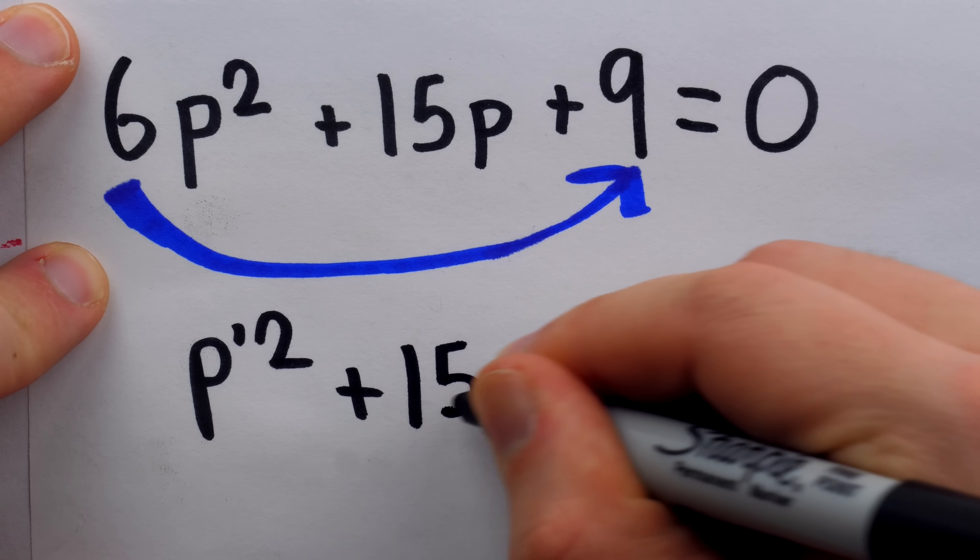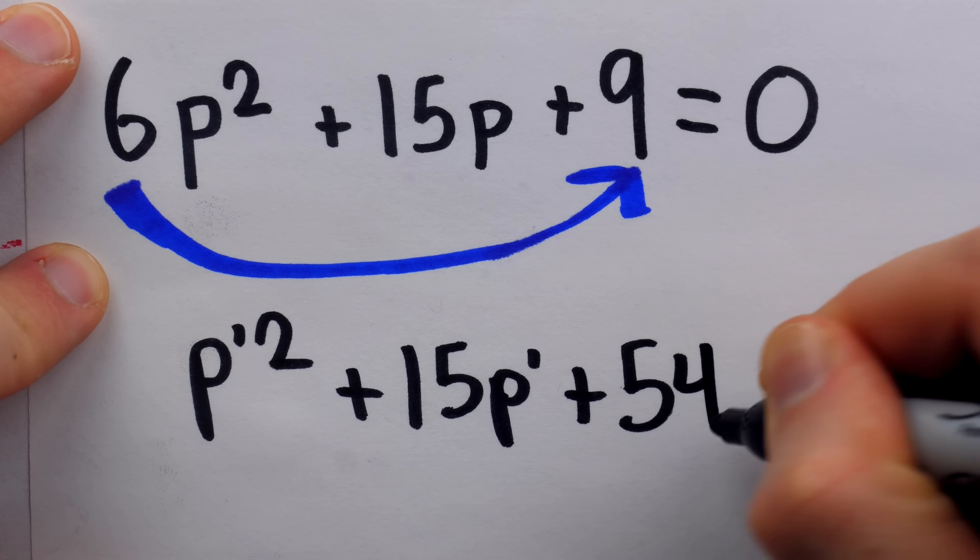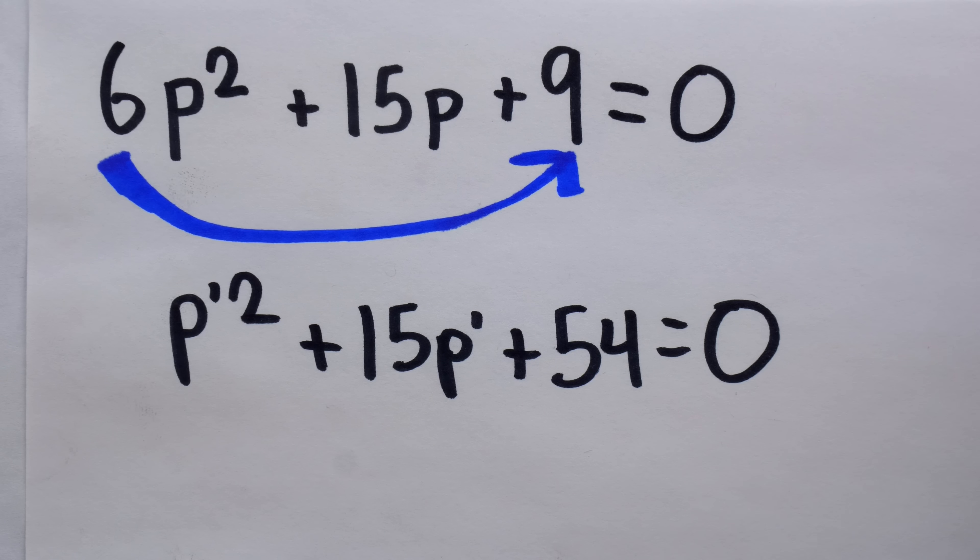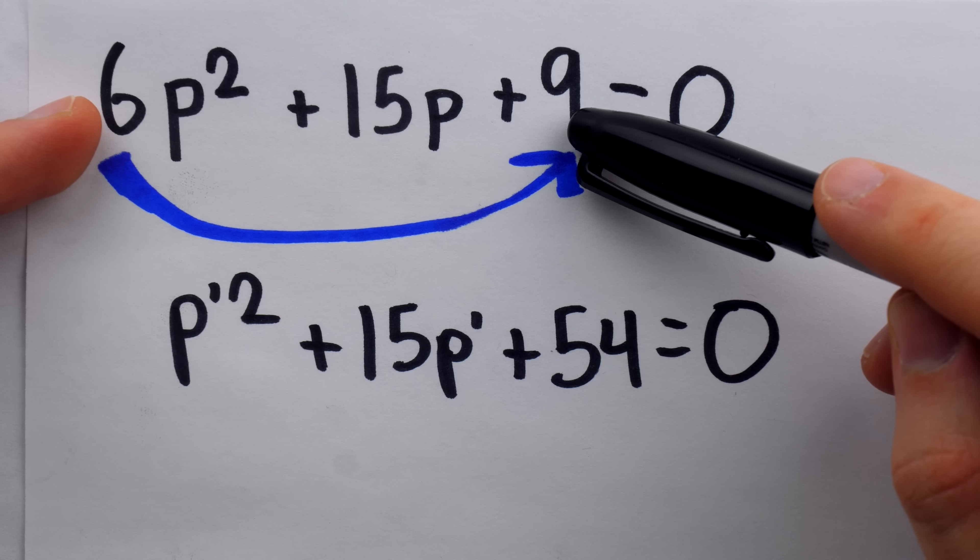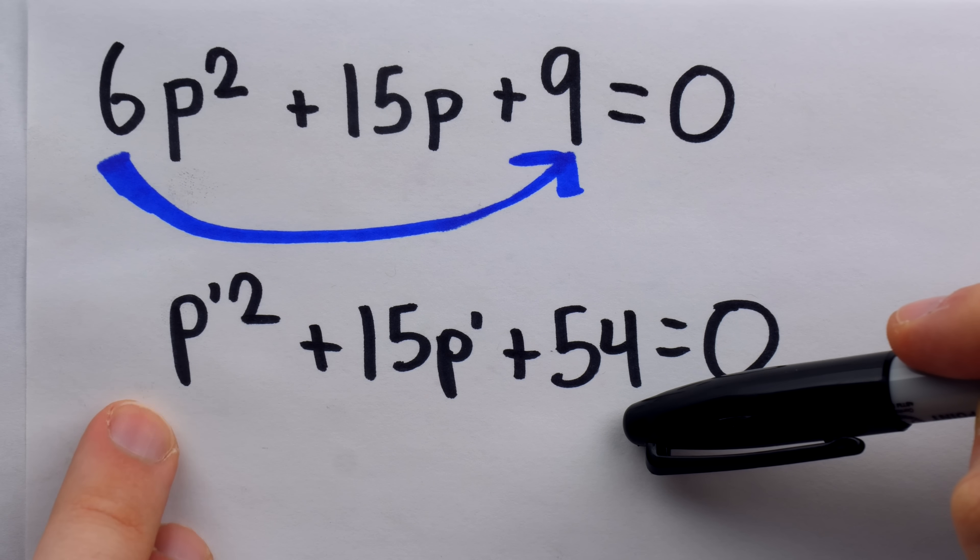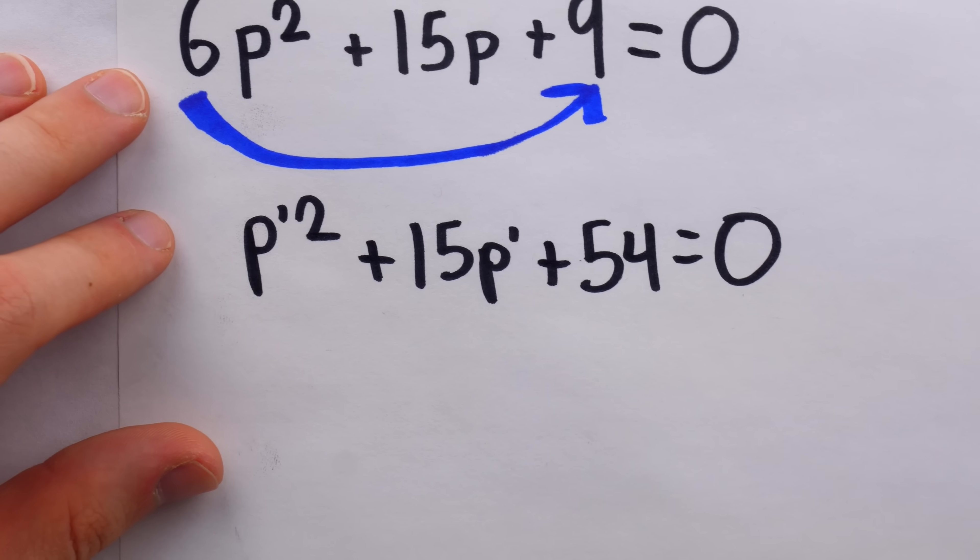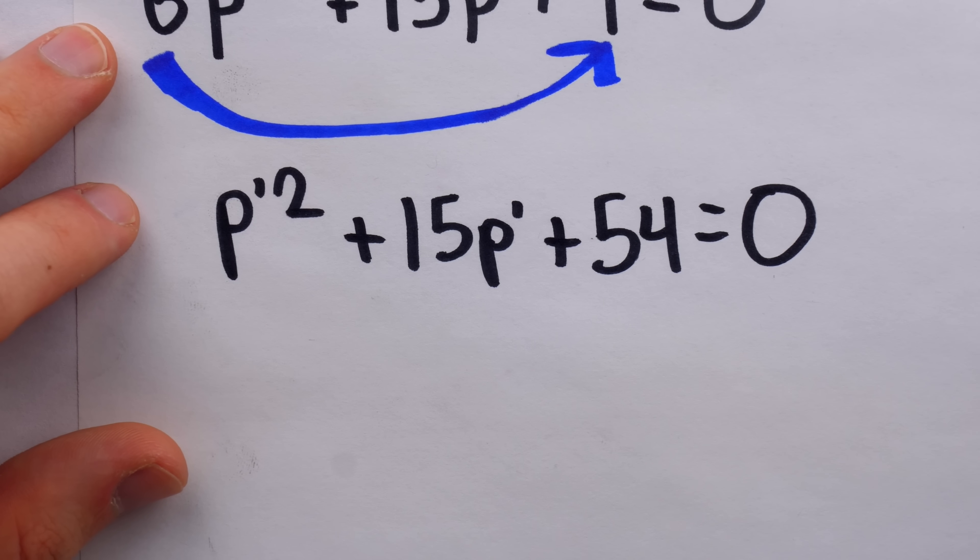Plus 15p prime, plus 9 times 6, which is 54, and this is equal to 0. So again, just multiply that constant term by the leading coefficient, that gives us 54, our new constant term, and now we can use a leading coefficient of 1. The benefit is that this is just easier to factor now that the leading coefficient is 1.